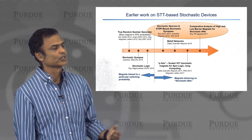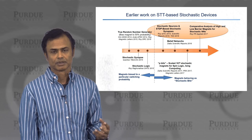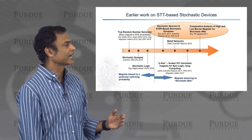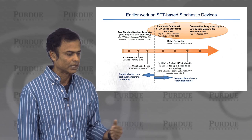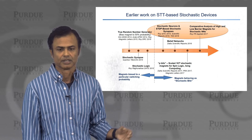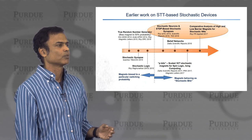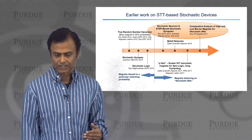When barrier height is too low, variations in these nanomagnets can potentially change the performance. Also, if the barrier height is too low it becomes very difficult to read the magnet because the read current going through the MTJ can pin the free layer. Following those works, there has also been work on deep belief networks using stochastic nanomagnets in Professor Datta's group, and more recently in our group a comparative analysis of using high and low barrier magnets for stochastic computing applications.